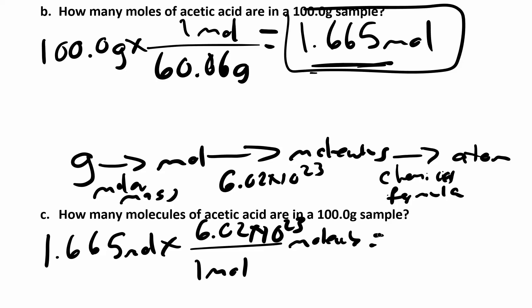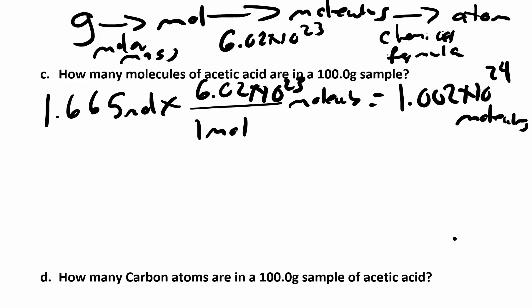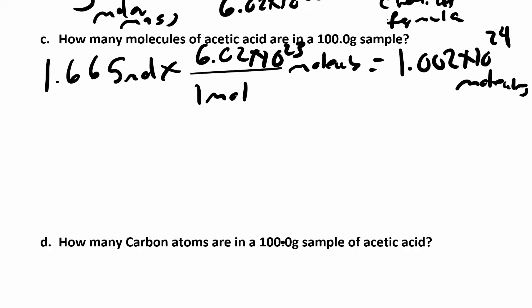when you multiply that through, you end up with 1.002 times 10 to the 24 molecules. The very last step: they want to know how many carbon atoms are in a 100 gram sample. We don't have to go all the way back to grams—grams to moles, moles to molecules, molecules to atoms.